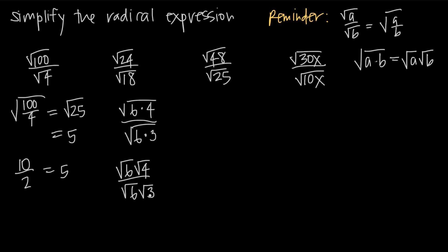Now the square root of 6 in the numerator cancels with the square root of 6 in the denominator, since square root of 6 over square root of 6 equals 1. So we're just left with the square root of 4 over the square root of 3. Since the square root of 4 is 2, we can simplify the numerator and write 2 over the square root of 3.